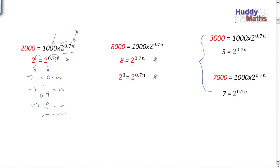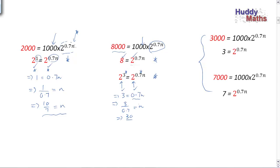For the 8,000 case, we divide both sides by 1,000 to get 8 equals 2 to the 0.7n. The hot number here is 2, because 8 can be written as 2 cubed, which is a power of 2. This side is already a power of 2. The same base raised to two different-looking powers — if they come to the same number, their powers must be equal. So dividing both sides by 0.7 to get n: that's 3 divided by 0.7 tenths, invert and multiply, giving 10 over 7.